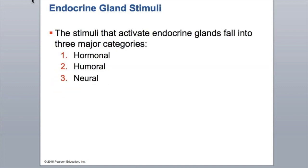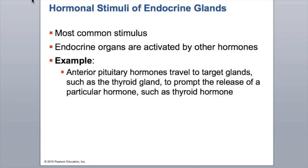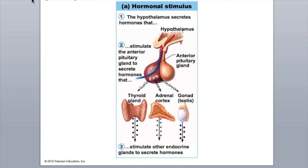The stimuli that activate hormone release fall into three major categories: hormonal, humoral, and neural. Hormonal stimuli occur when endocrine glands are activated by other hormones — for example, the hypothalamus secretes a hormone that stimulates the anterior pituitary, whose hormones then travel to target glands such as the thyroid to prompt the release of thyroid hormone. One hormone stimulates another gland that releases another hormone that stimulates yet another gland. That is your hormonal stimulus.